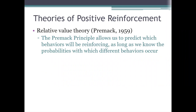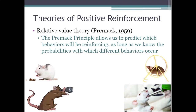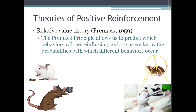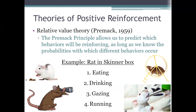Let's say we have a rat in a Skinner box, and we give it unlimited access to food, water, an exercise wheel, and a window it can gaze out of. So there are four behaviors we're interested in: eating, drinking, running, and gazing. We want to know the relative values of those behaviors, so we observe the rat for a while with no restrictions, let it do whatever it wants, record what it does, and then rank-order those behaviors by frequency. Let's say the most frequent activity was eating, followed by drinking, then gazing out the window, then running in the exercise wheel.